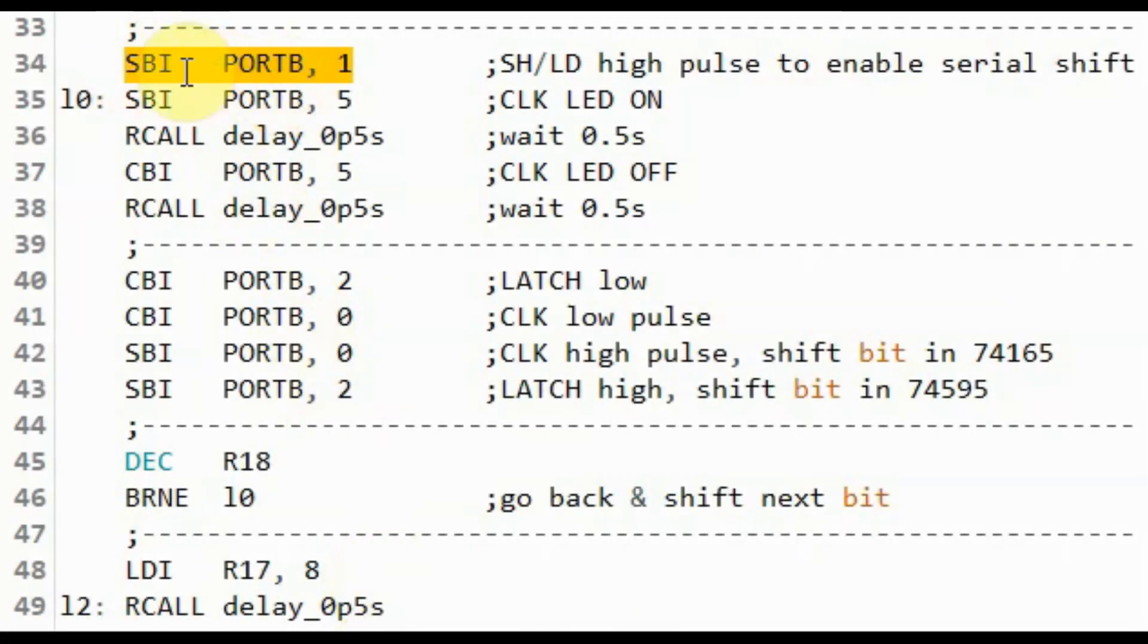Next we send a high pulse over pin PB1 in order to enable the shift pin of the 74165. And then we send a rising edge clock pulse in order to shift out the bit from the 74165 and at the same time shift in a bit into the 74595.